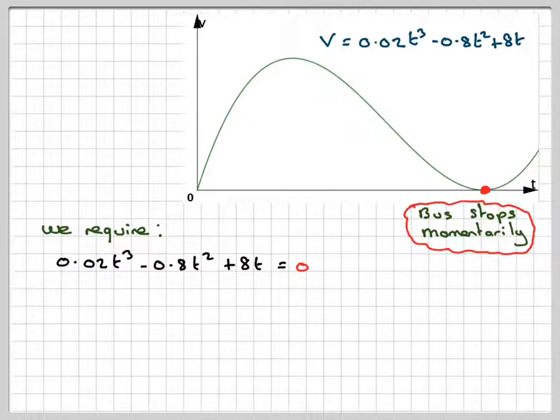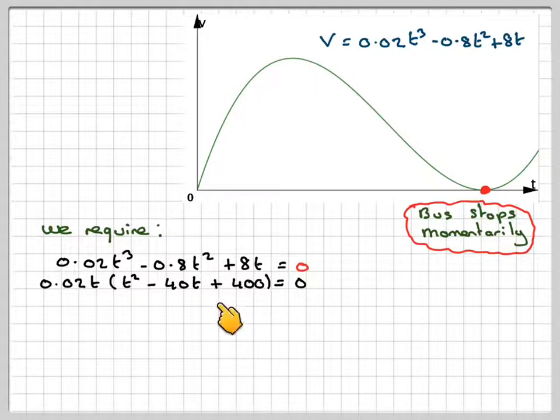Using detailed reasoning, so not using a calculator, we're going to take out 0.02t. That will give me t squared. If you divide 0.8 by 0.02, you're going to get minus 40t. And if you divide 8 by 0.02, you're going to get 400, which equals 0.